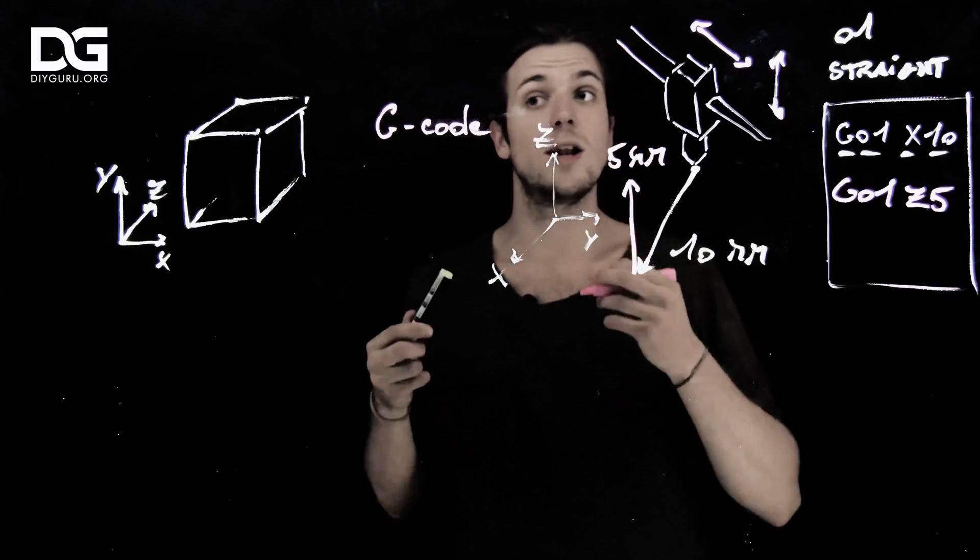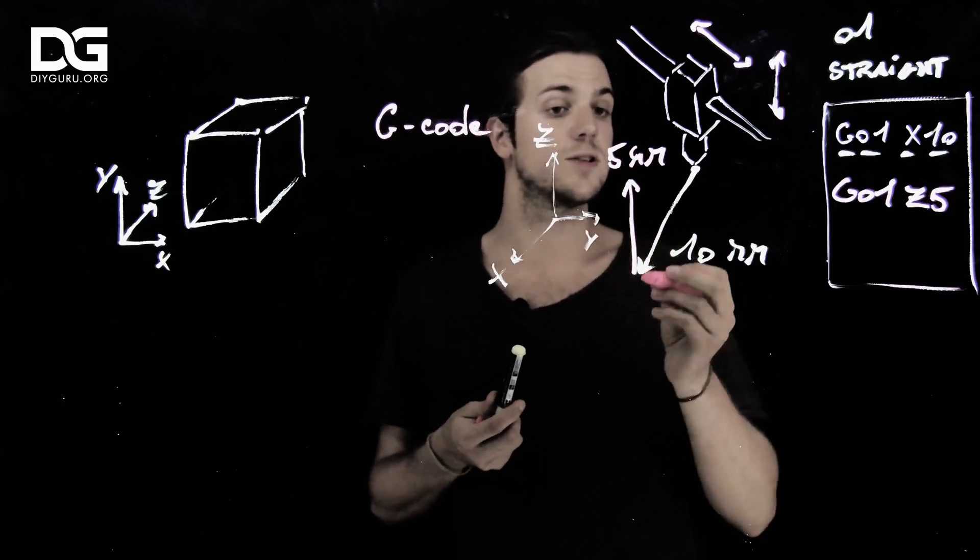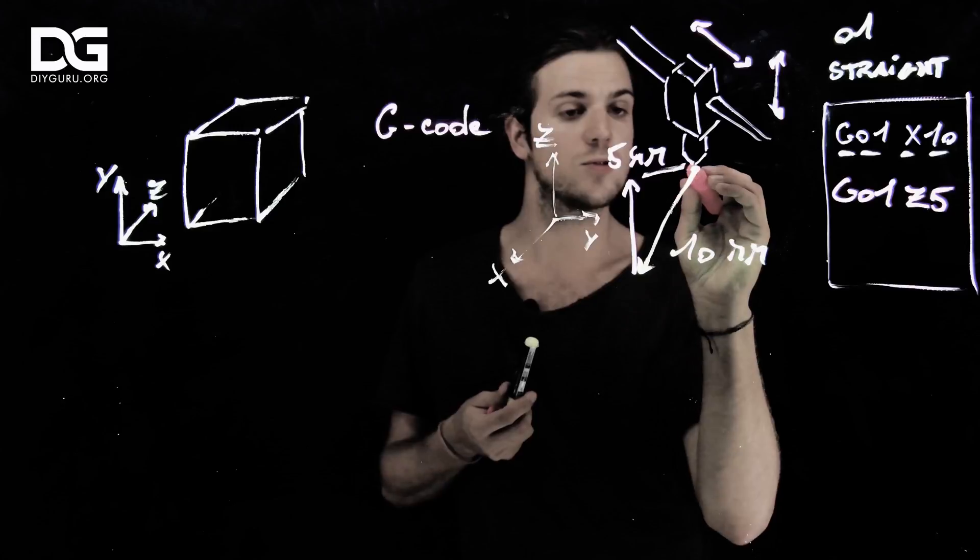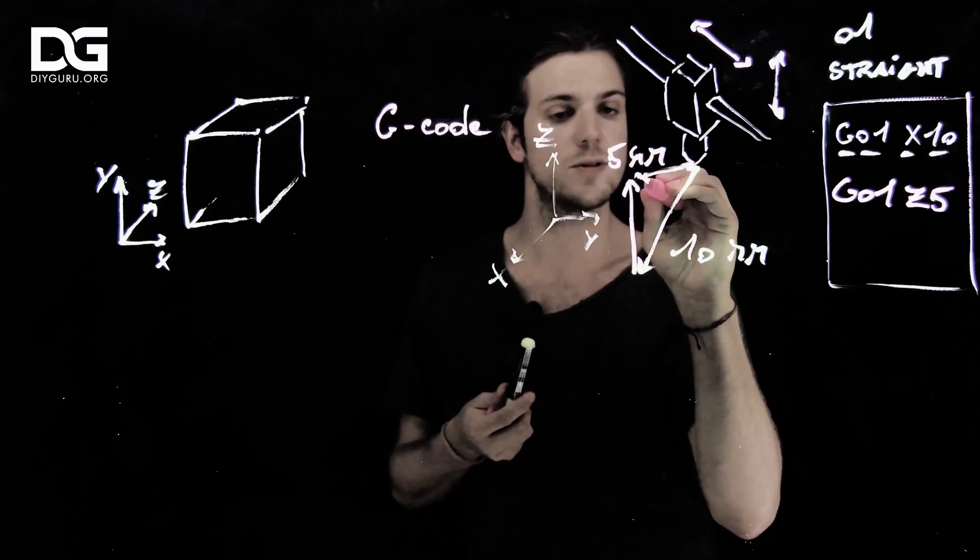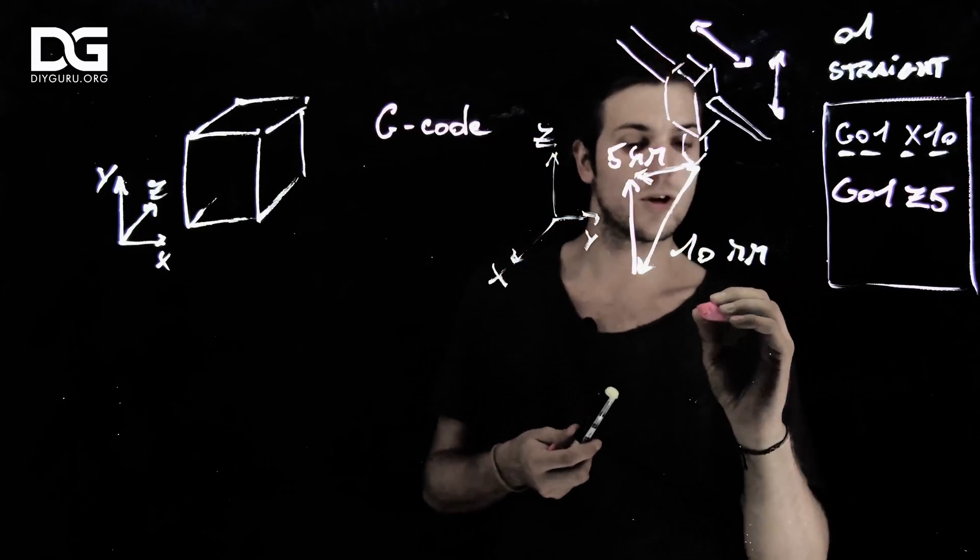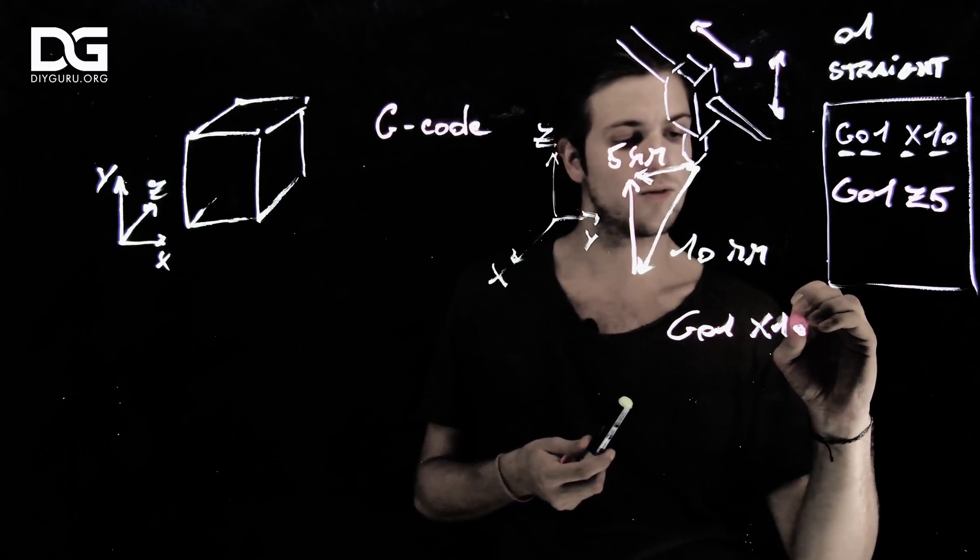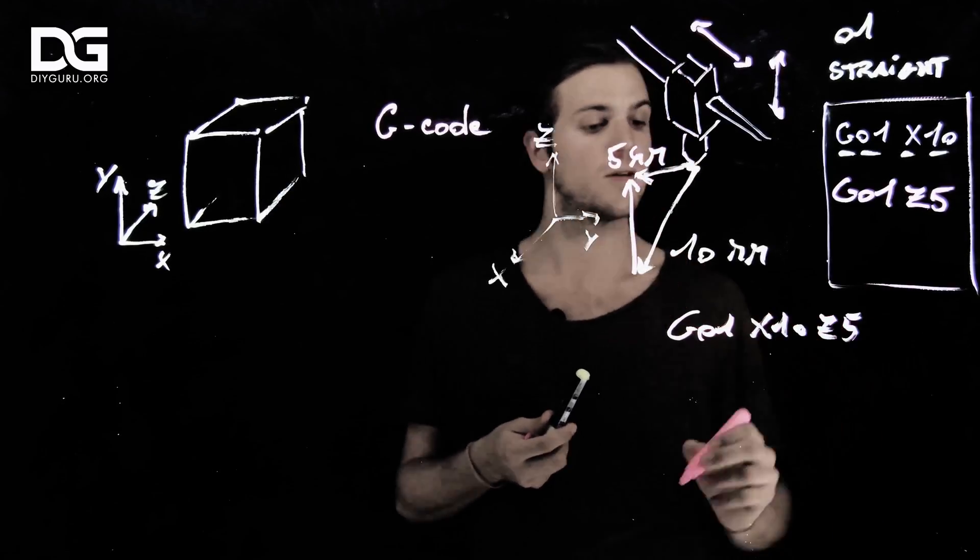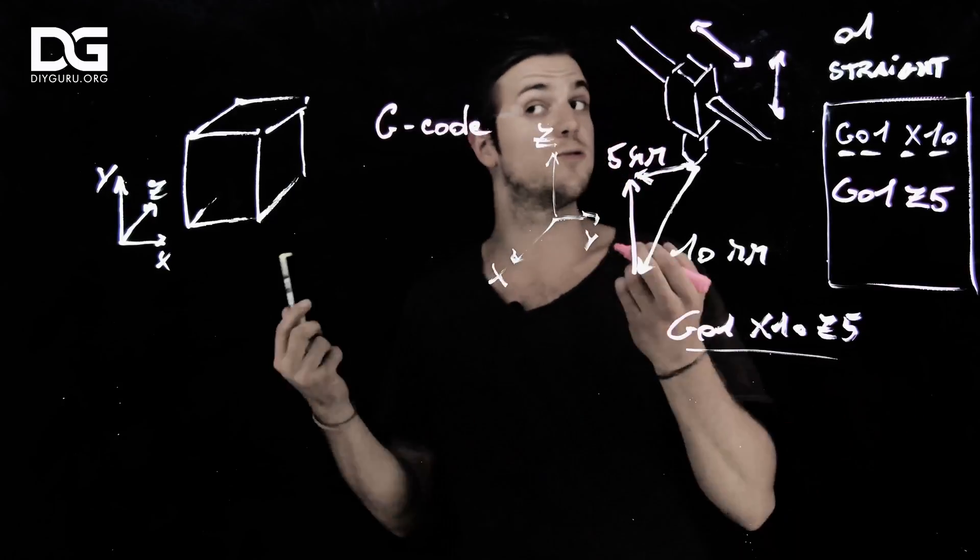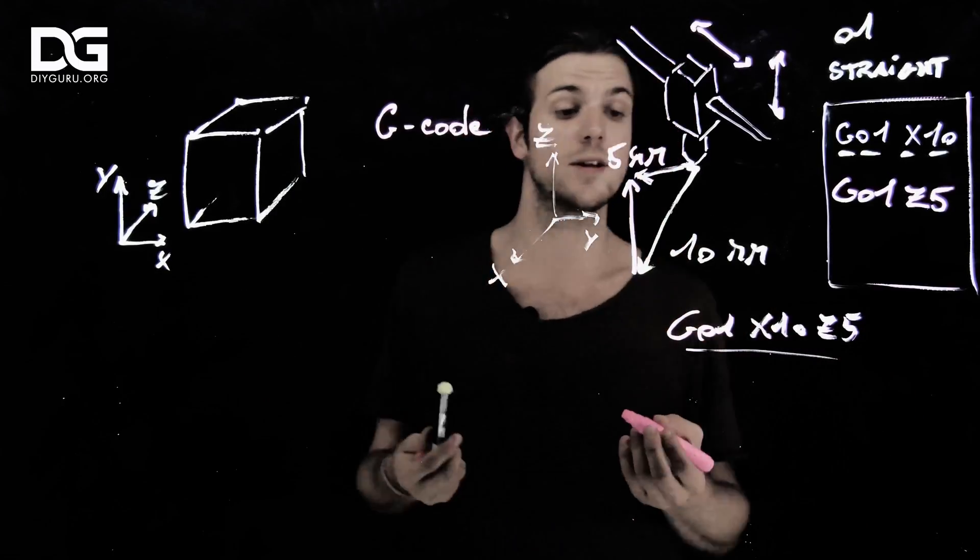And this 01 command is called linear interpolation, actually. Which means that if you want to go from this point up to this point, straight, straight, you simply go with the same command, but adding the two coordinates together. Just like you would add two vectors in mathematics. That's pretty fairly simple.